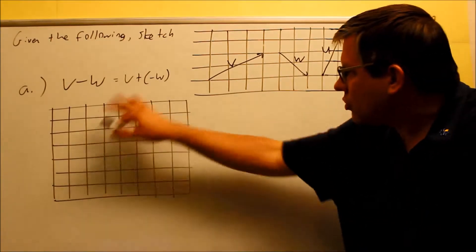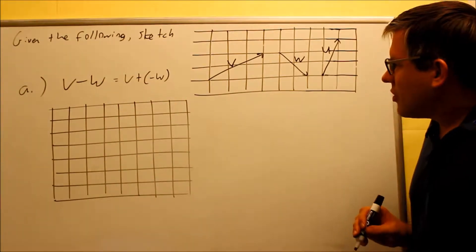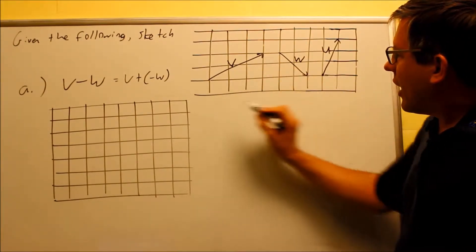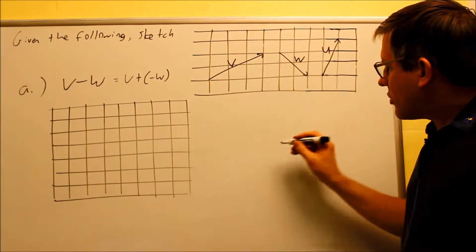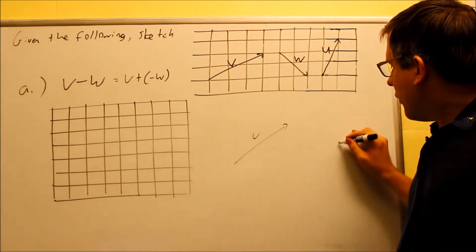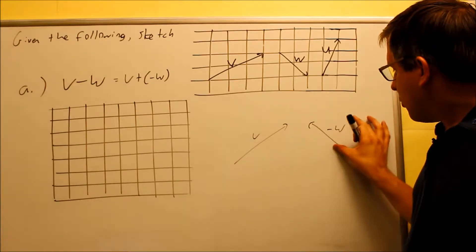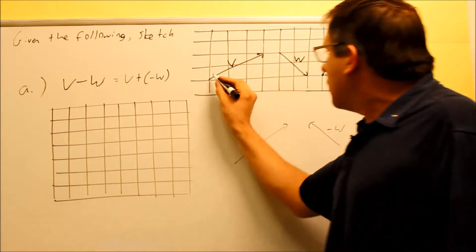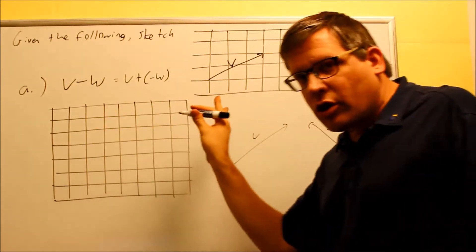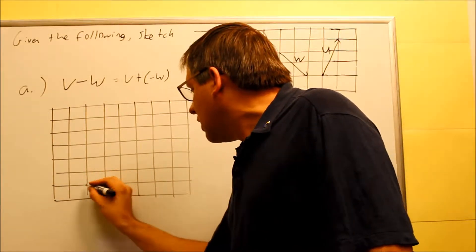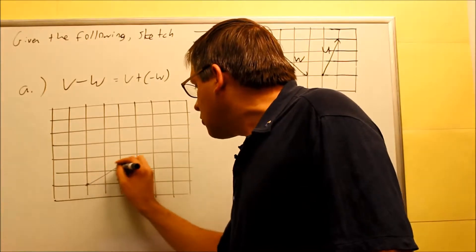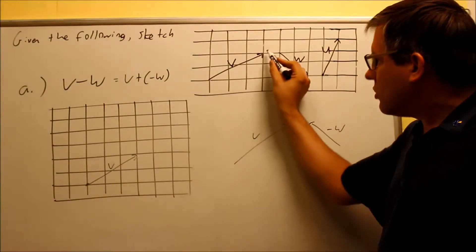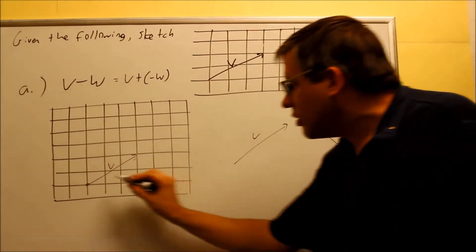Now we're going to use this concept and redraw this on the provided grid. I can basically start anywhere — I'm taking V, drawing it out, and then adding it to a negative W. I'm going to start right here and go three places to the right and up two units, drawing V right here. This must match the original drawing, so it has to go over three, up two — exactly what the original drawing does.